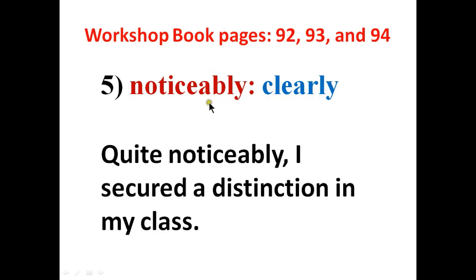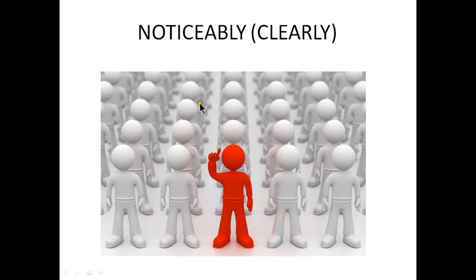Our next word is 'noticeably.' Noticeably means obviously or clearly — not hidden. The sentence is: quite noticeably, I scored a distinction in my class. Here is an illustration: in a class of 25 or 30 students, when there is a quiz and you score the highest marks and stand first, you are noticeably the topper — prominent and better compared to any other student.